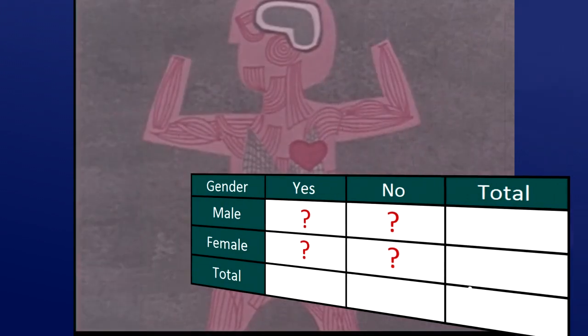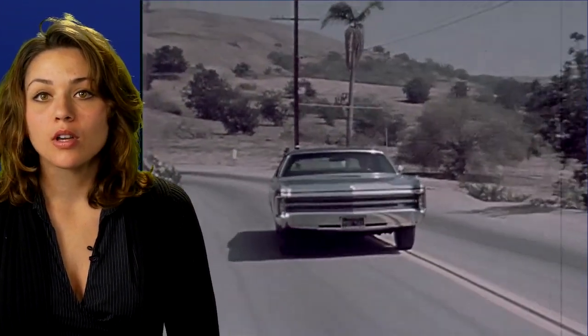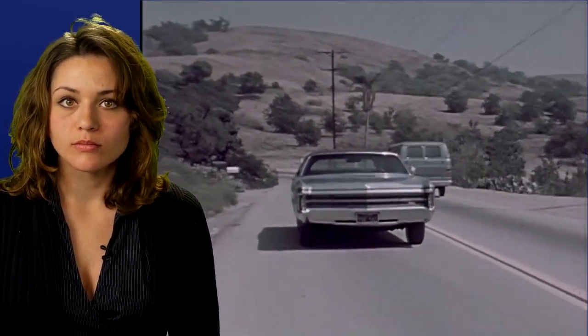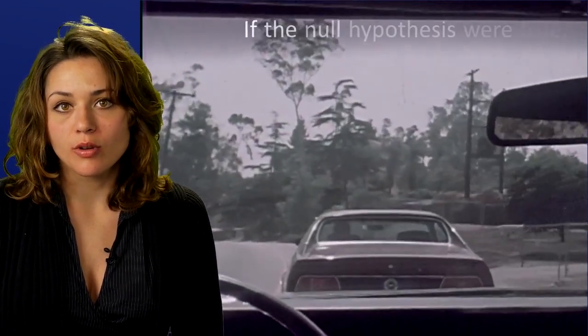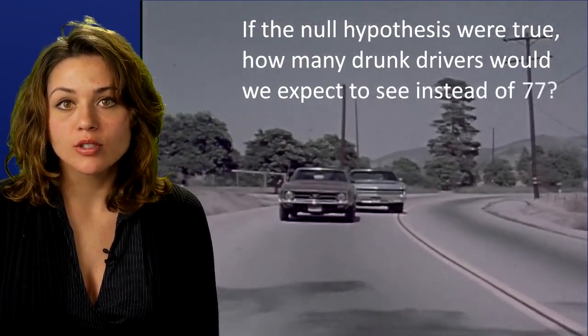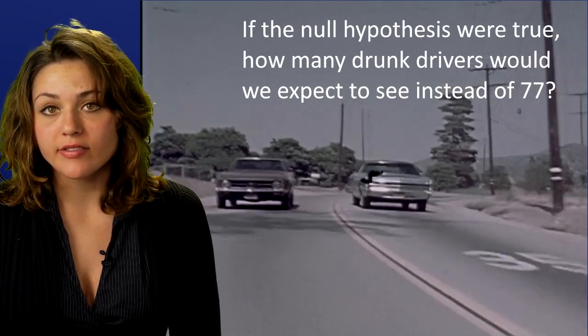For example, we actually observed 77 males who drove drunk. If drunk driving and gender were really independent, if the null hypothesis were true, how many male drunk drivers would we expect to see instead of 77?